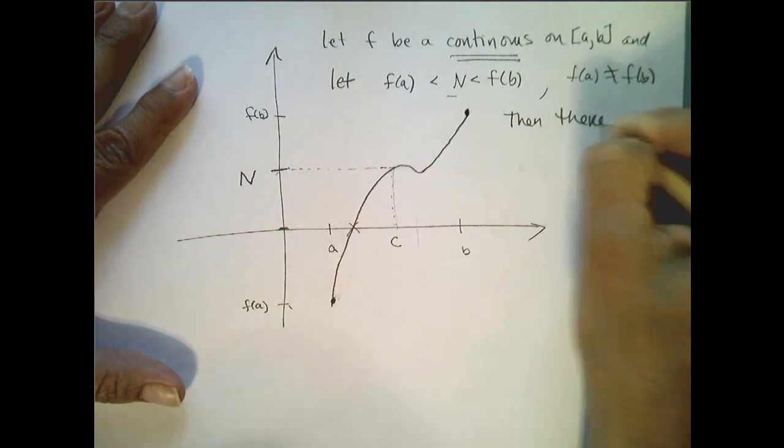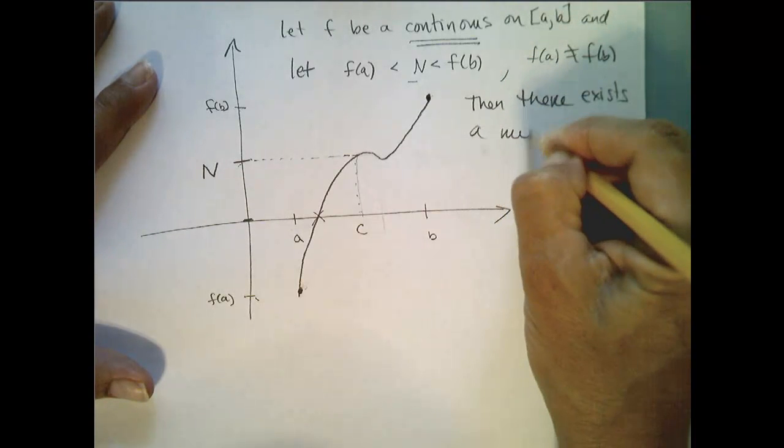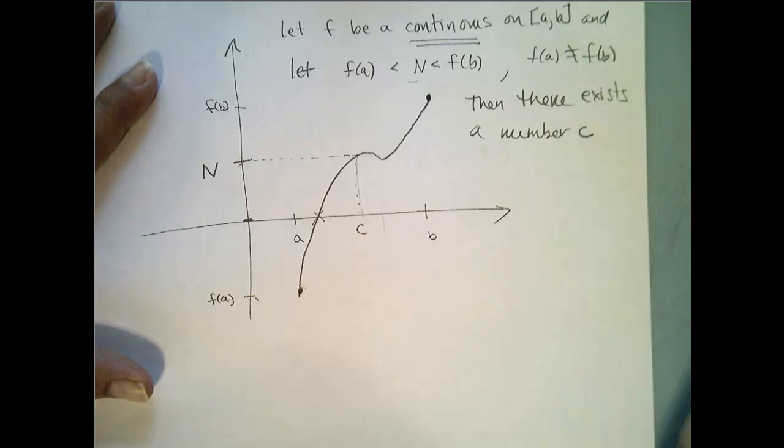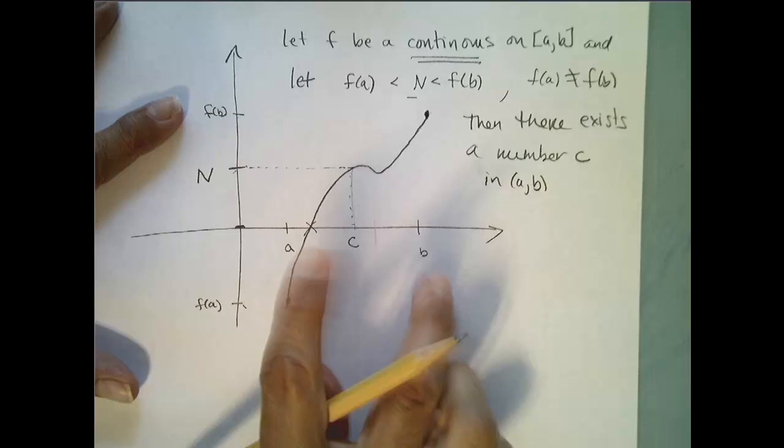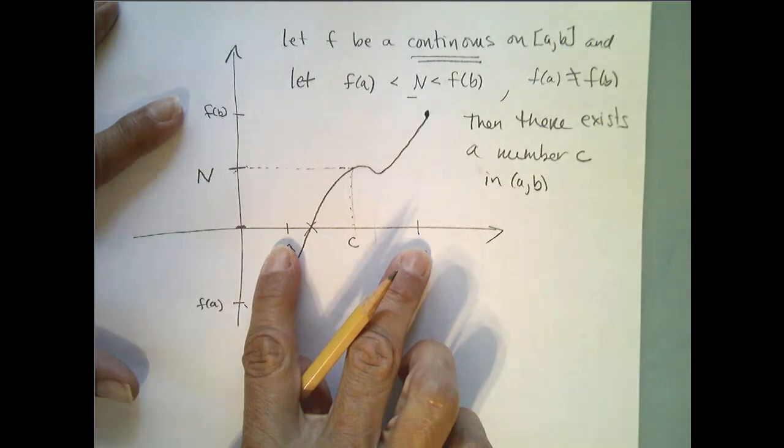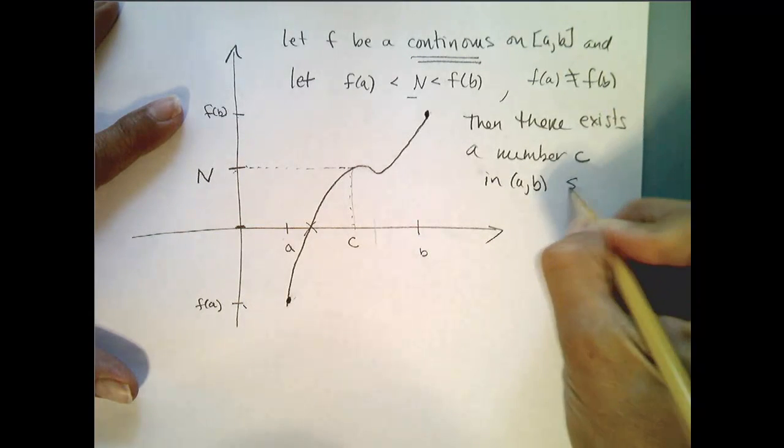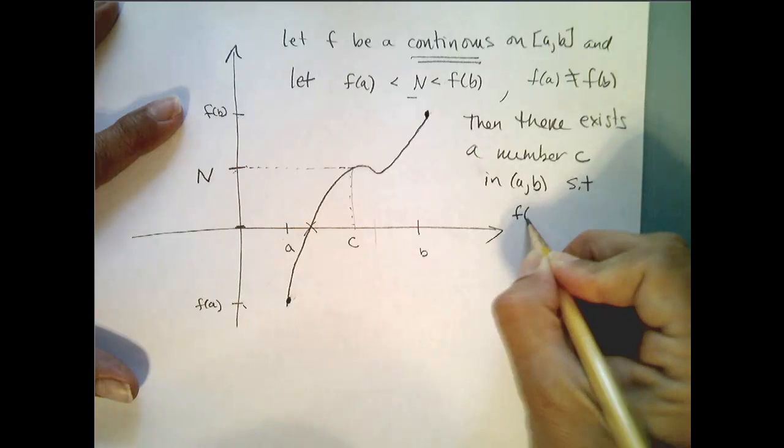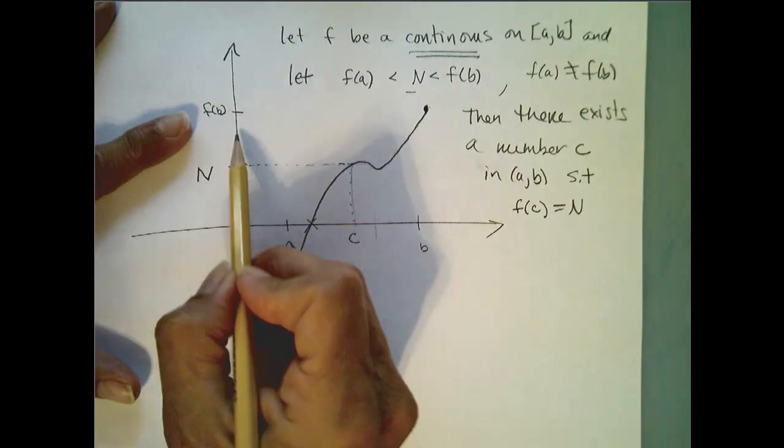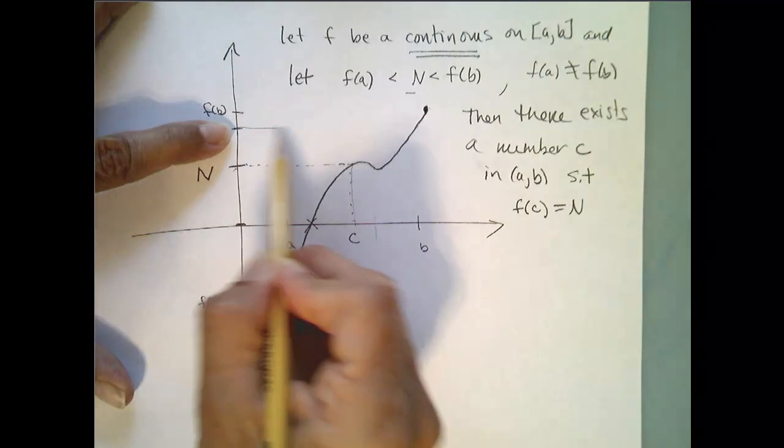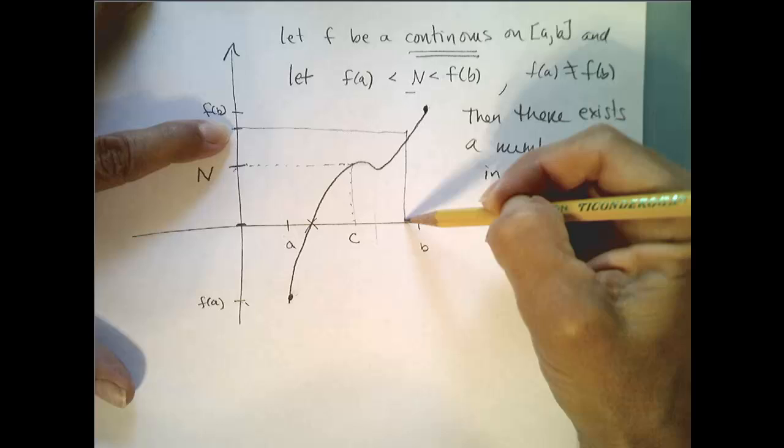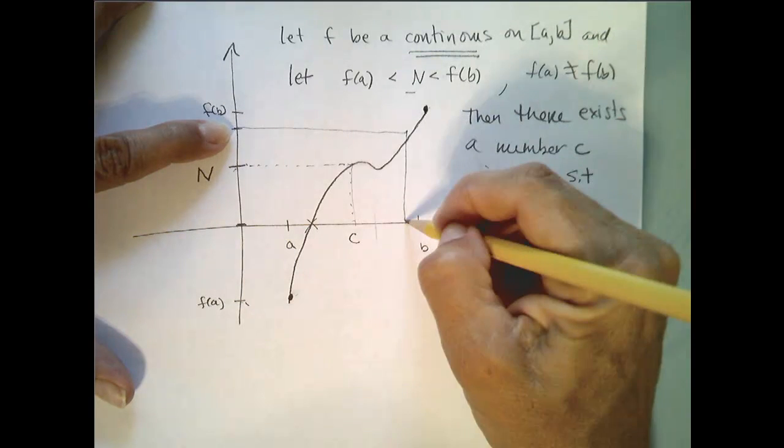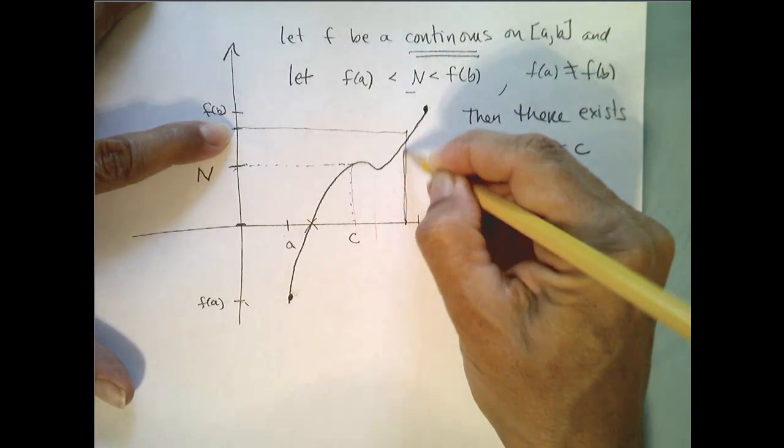Then there exists a number c in the interval a, b, so somewhere between a and b, not including a and b, such that f of c is equal to n. So no matter which value you choose between f of a and f of b, you're going to find a value between a and b such that that value gets mapped.